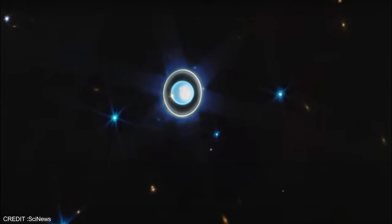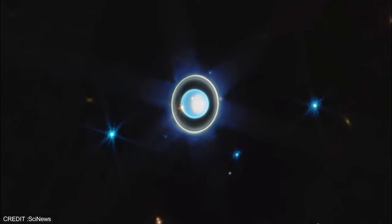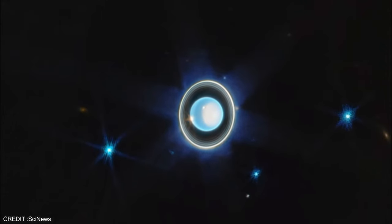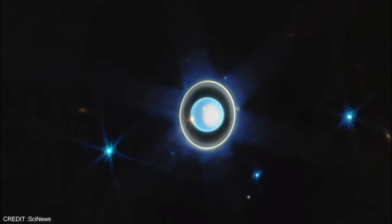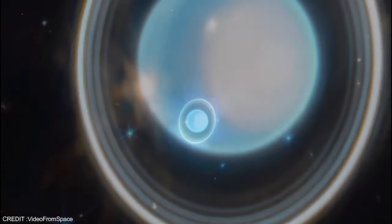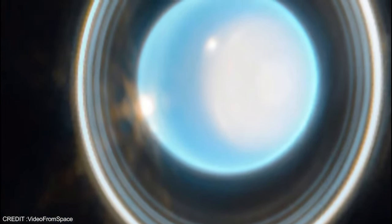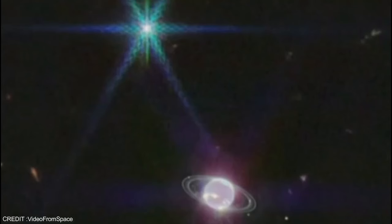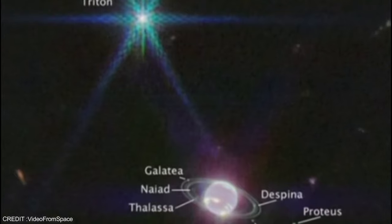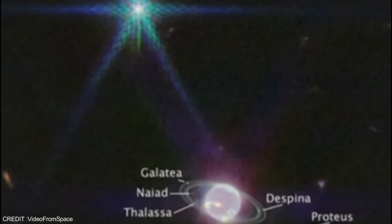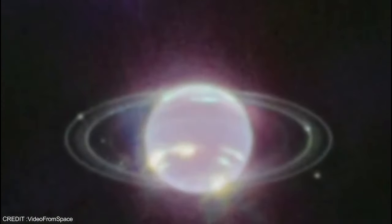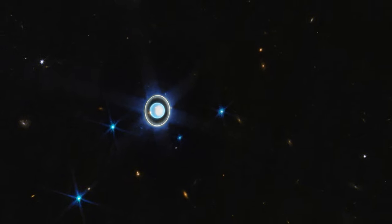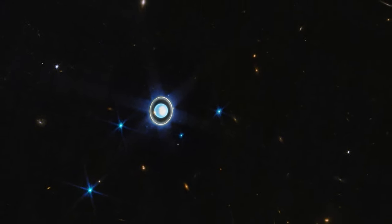The image also captures Uranus's unique orbit, which is tilted at roughly a 90-degree angle to its path around the Sun, resulting in extreme seasons with each pole exposed to constant sunlight for many years before being plunged into darkness for an equal amount of time. The image is particularly exciting because it shows the right side of Uranus's north polar ice cap facing the Sun and brightening. This feature has never been seen before.